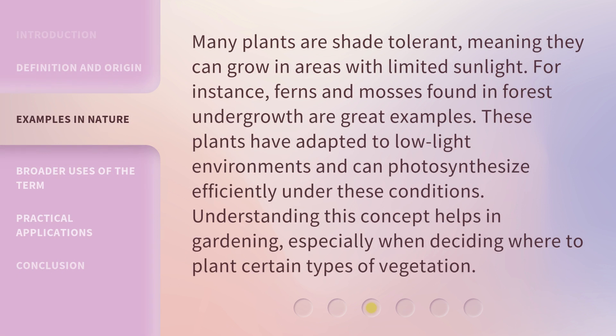Many plants are shade tolerant, meaning they can grow in areas with limited sunlight. For instance, ferns and mosses found in forest undergrowth are great examples. These plants have adapted to low light environments and can photosynthesize efficiently under these conditions. Understanding this concept helps in gardening, especially when deciding where to plant certain types of vegetation.